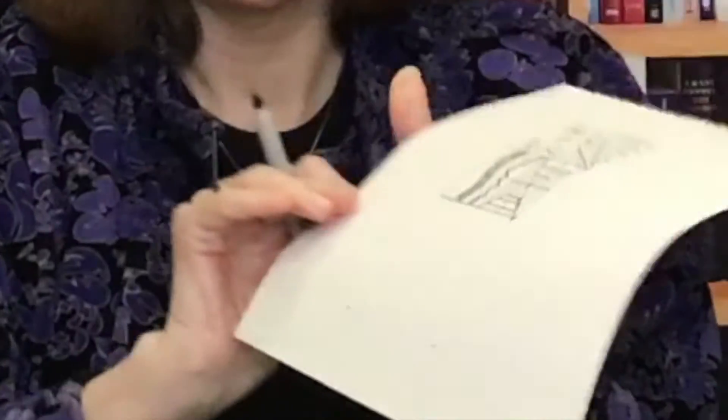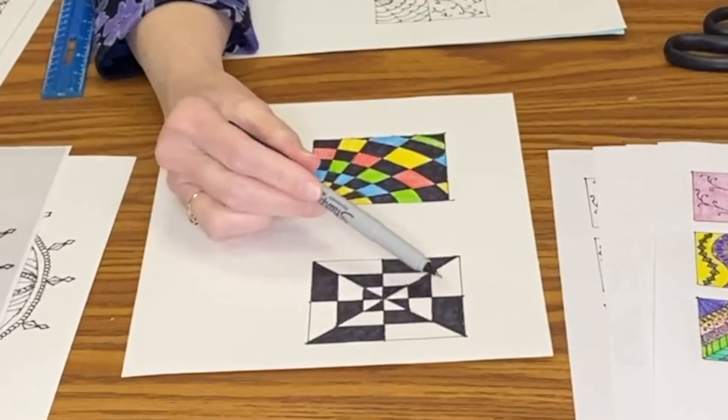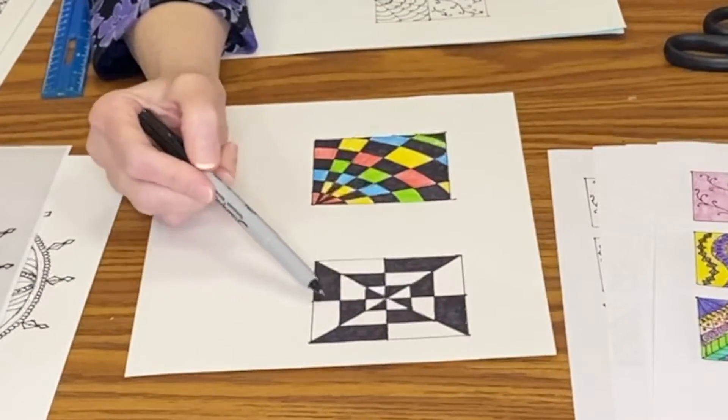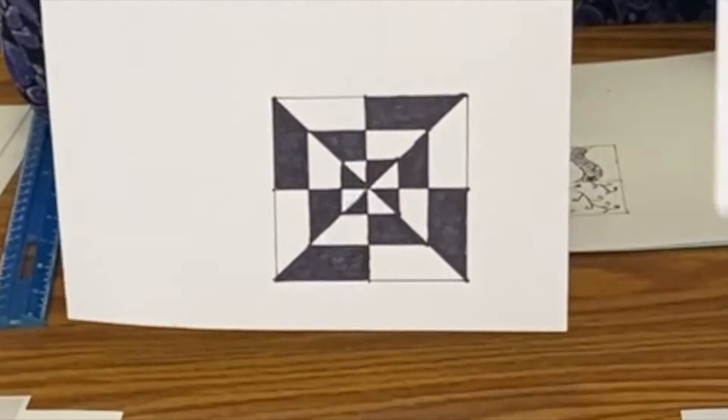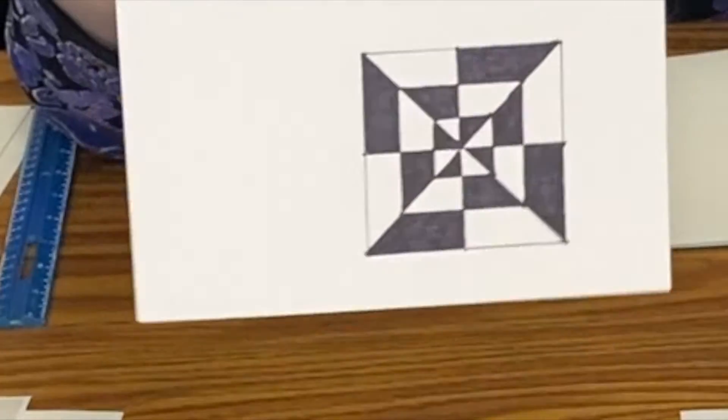There's different possibilities with this design. Like you can do alternating black marks, or you can just add colors like in this example, or you can use this same scheme here and just use two different colors, and that makes a very interesting design as well.